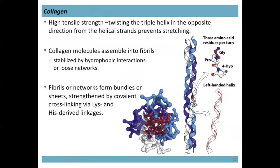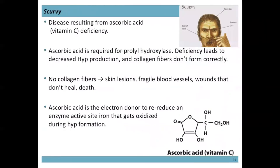Hydroxyproline and hydroxylysine are not encoded in the ribosome — they are modified after the protein is synthesized, a process called post-translational modification. Hydroxylysine is important for cross-linking the collagen fibers. The more cross-linking, the stronger and tougher the collagen — aged meat is tougher because its collagen has more cross-links, while filet mignon from young animals is more tender. Vitamin C deficiency prevents proper collagen formation because vitamin C is required for prolyl hydroxylase, the enzyme that converts proline to hydroxyproline.